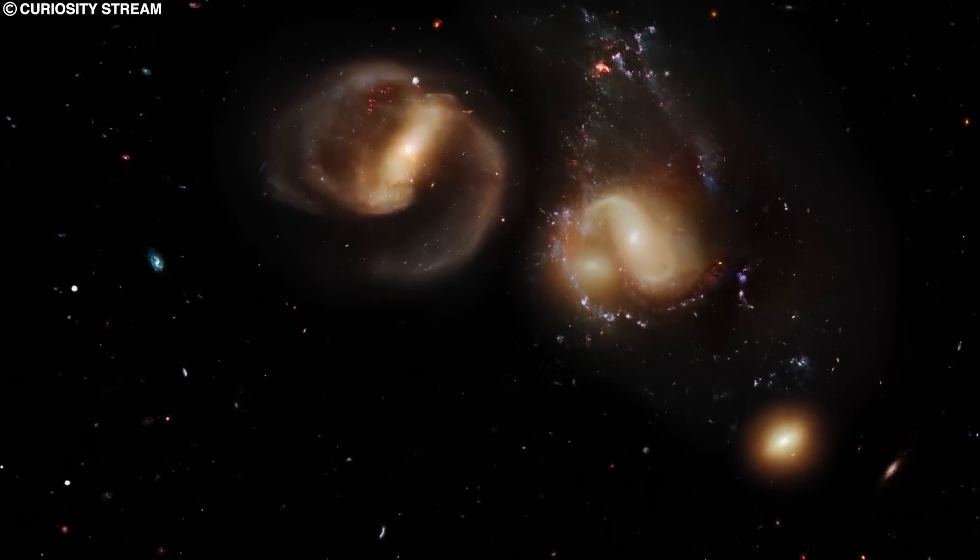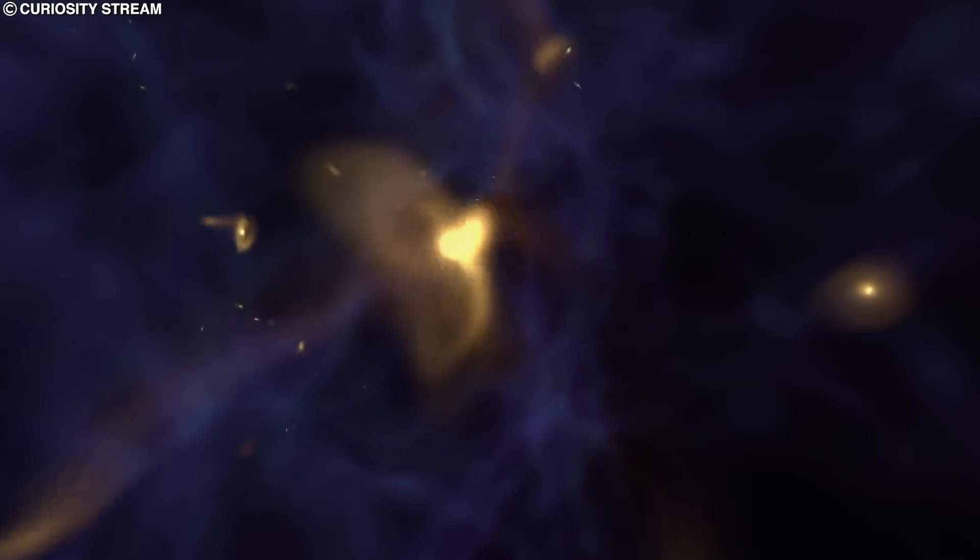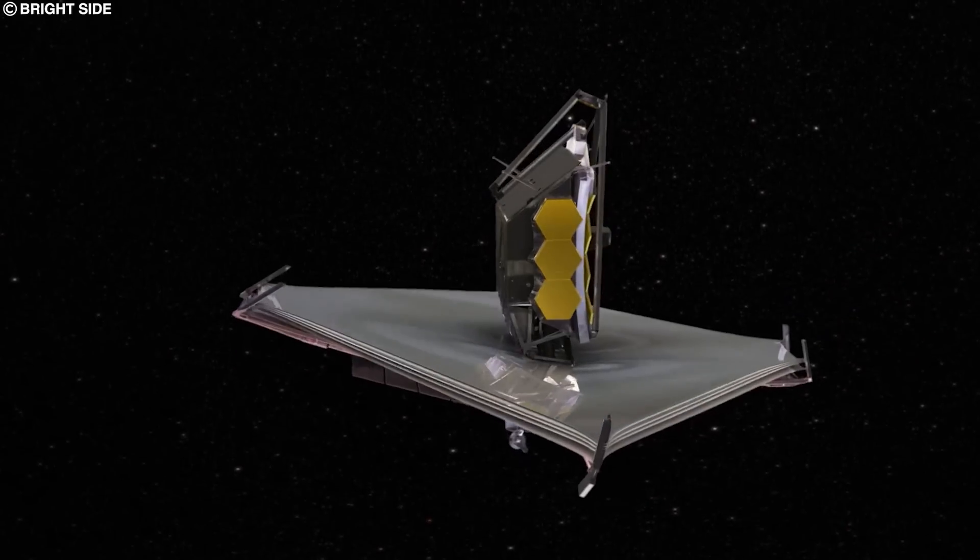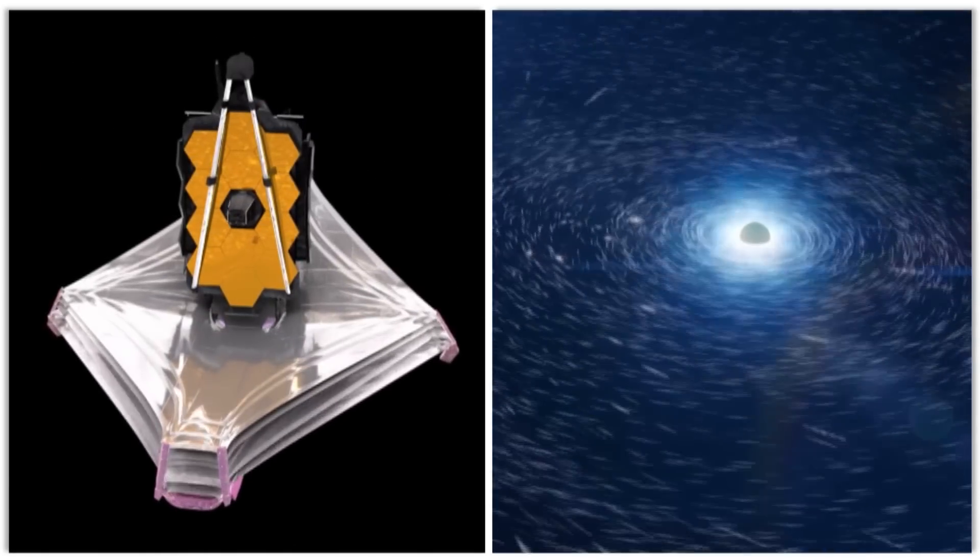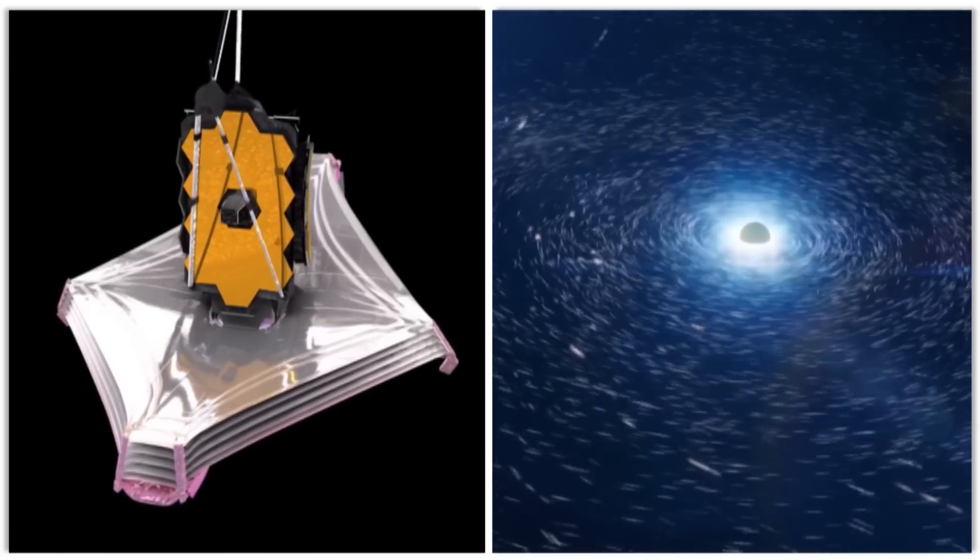Light from some of these galaxies has taken billions of years to reach us, indicating that what we are seeing are the early stages of formation of some of these galaxies and stars. But while photographing distant stars is quite impressive, it appears that James Webb might be used to study one of the strangest phenomena in the universe, black holes.